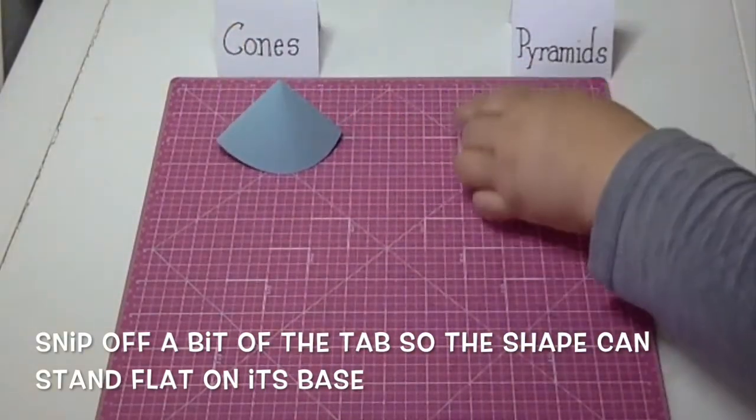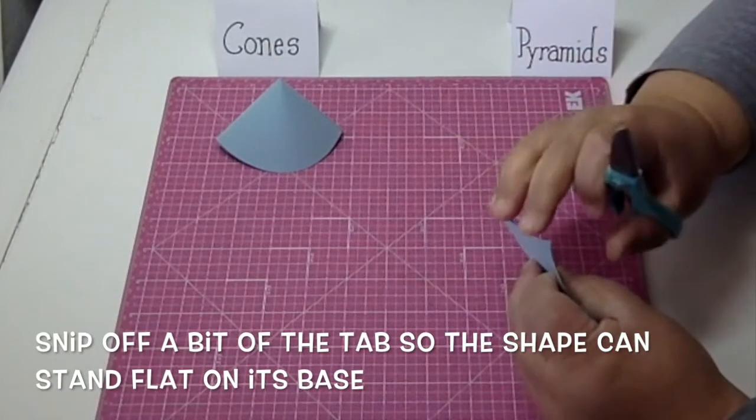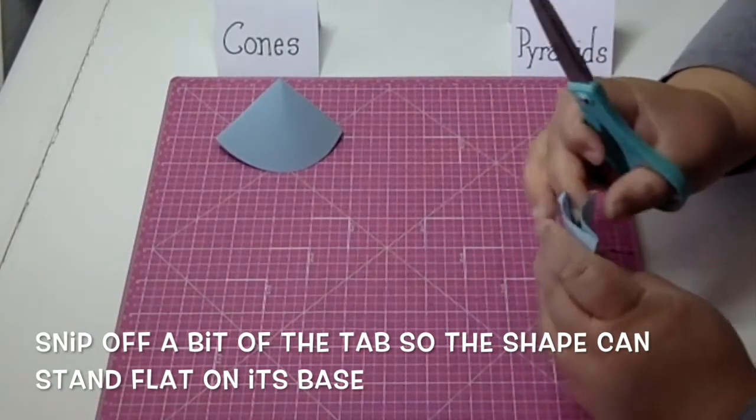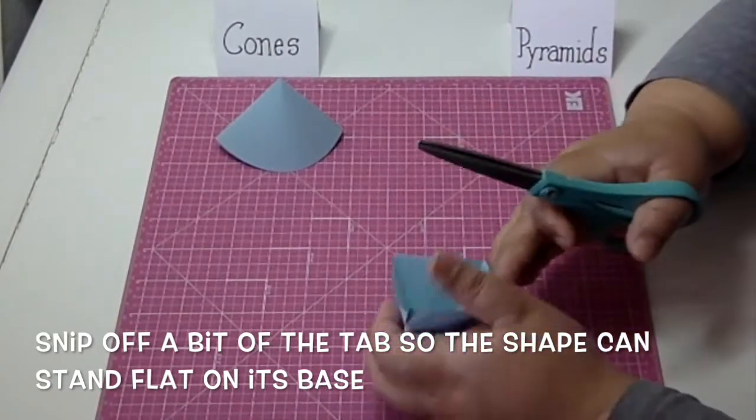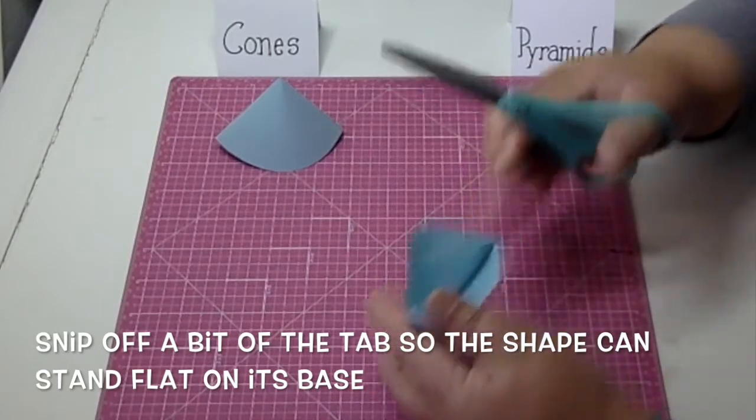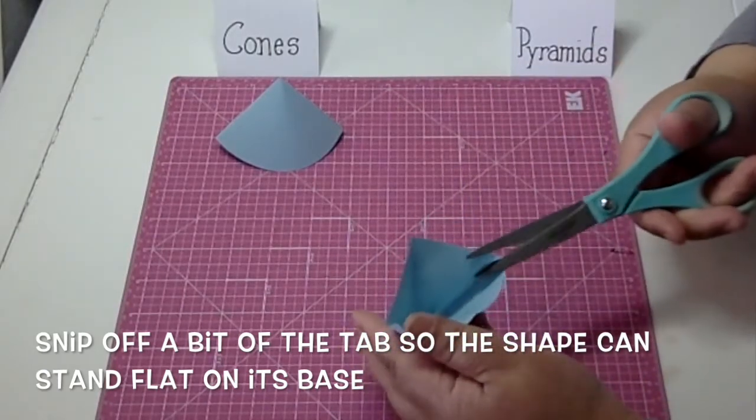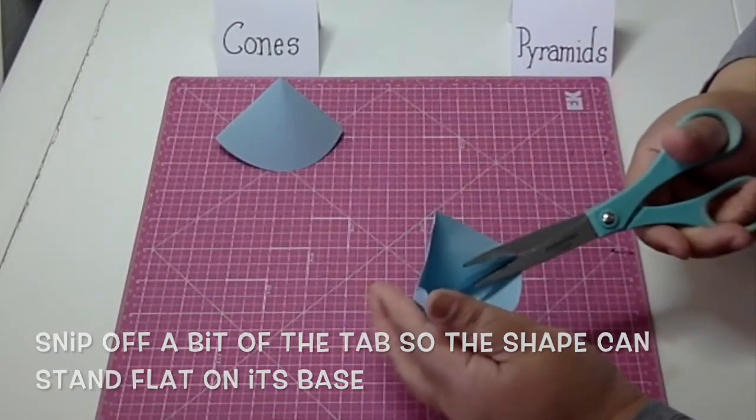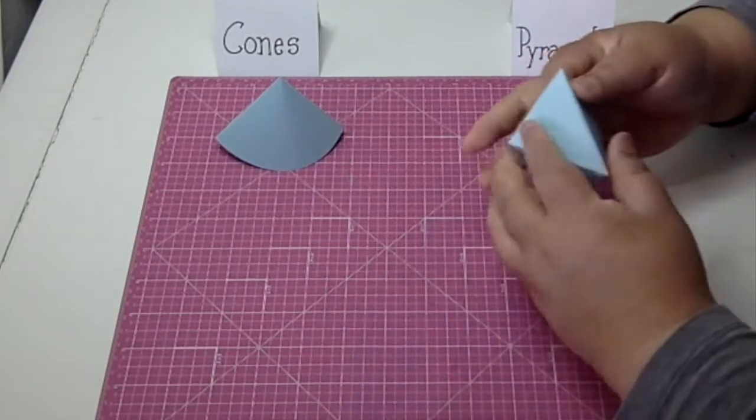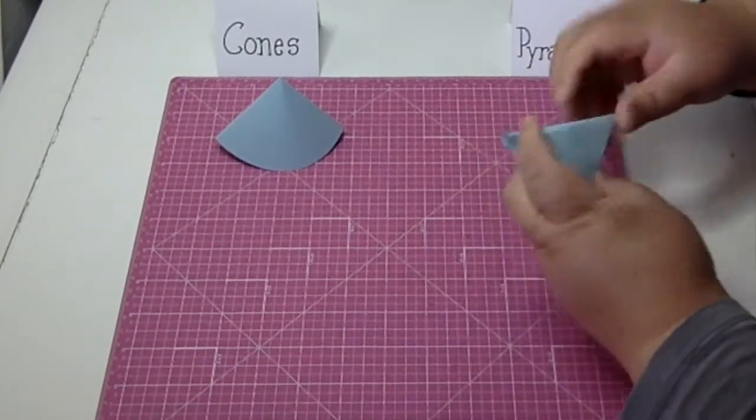I'm going to do the same thing with the pyramid. Just open it up and then kind of fold it open, and then snip off a bit of that tab.